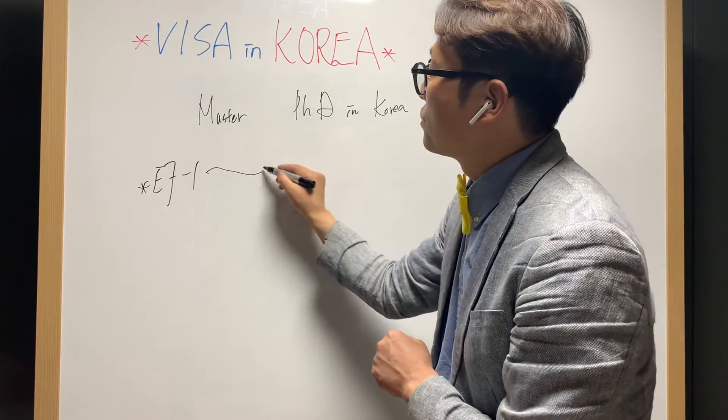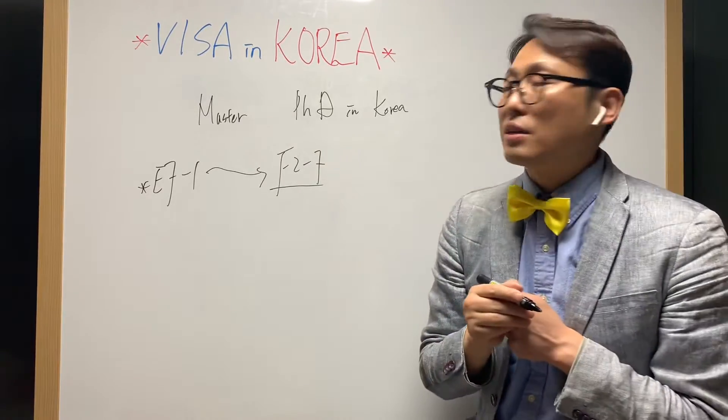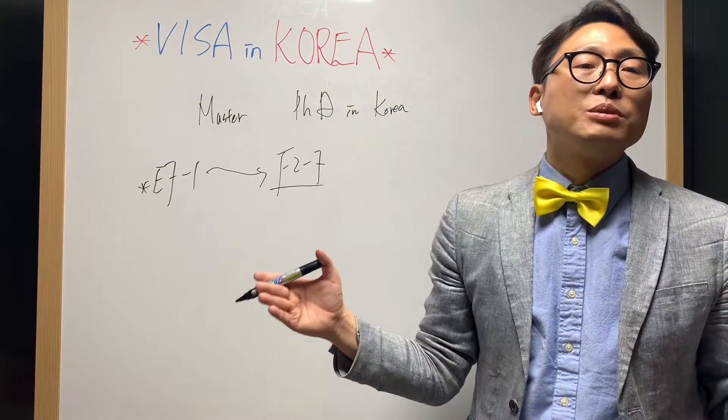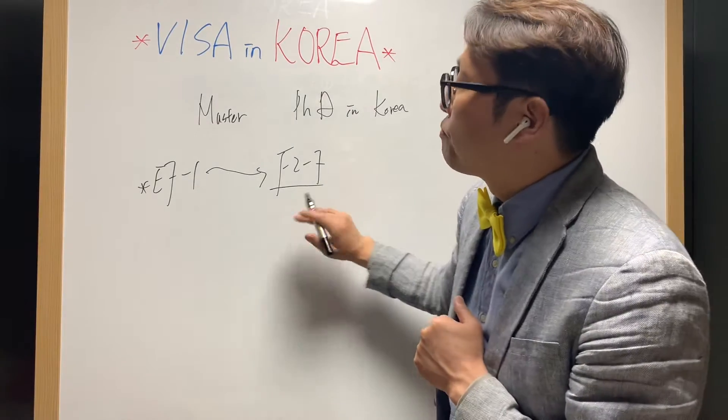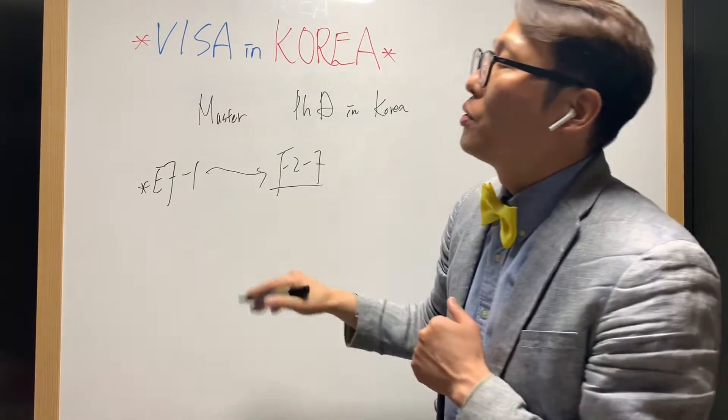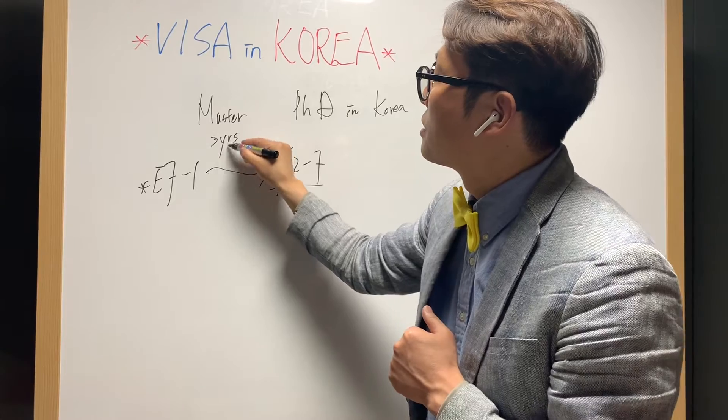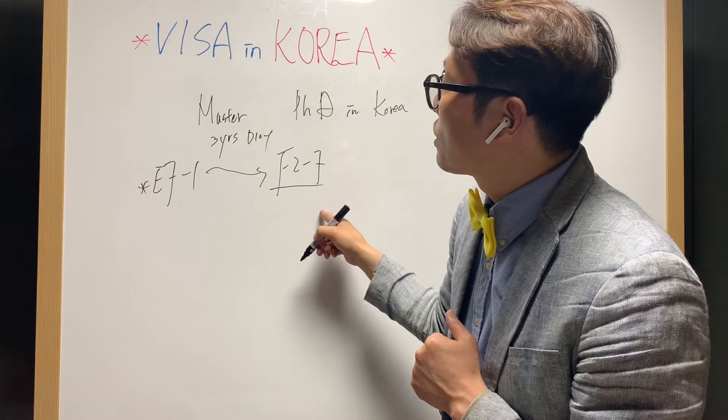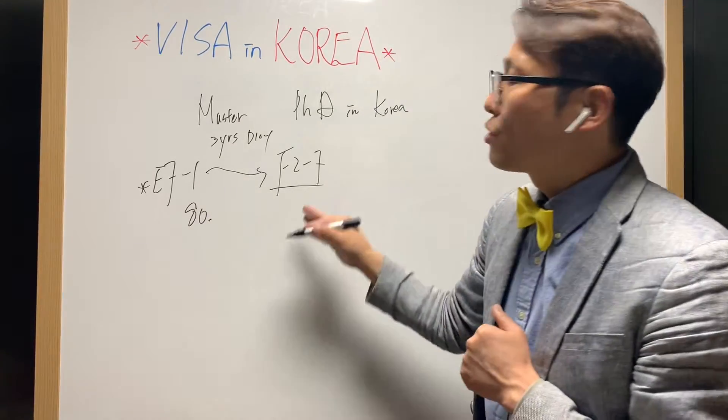You want to change to F2-7, the point system residency visa, which has a lot of benefits and you can work most any kind of jobs except for simple works. If you got a master, you have to study more than three years including D10, and if you meet this requirement and 80 points, you can apply for the F2-7.